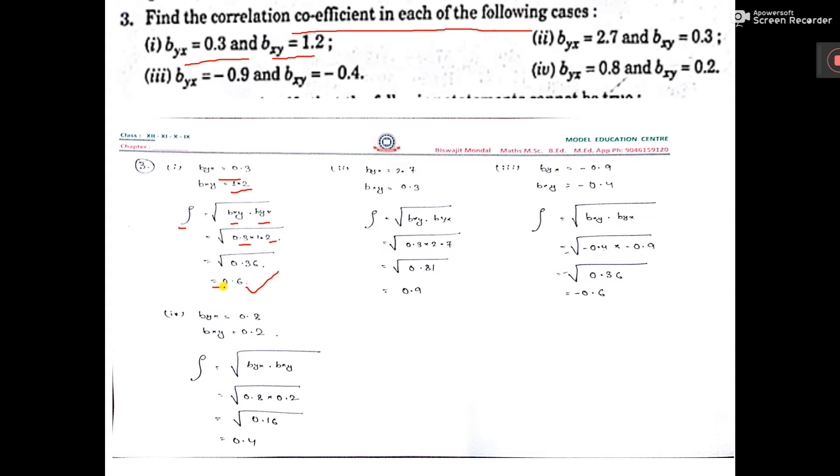And here we have to give plus sign, because both are plus. I told you, when I explained formula, that bxy, byx, if both are plus, then here will be plus. Number two, here also both are plus, so put the value and get the plus value answer.